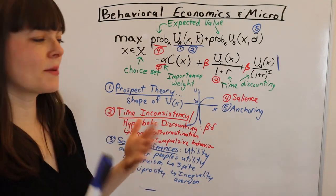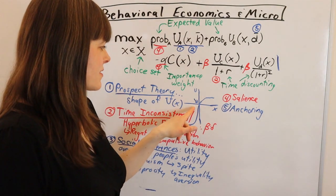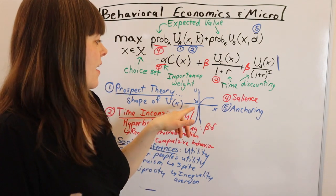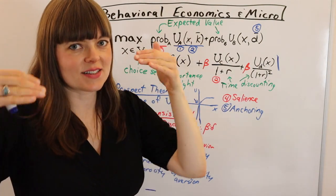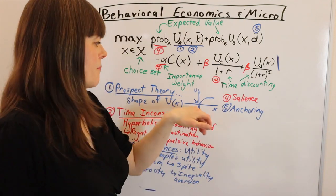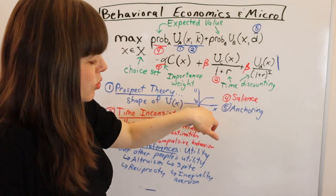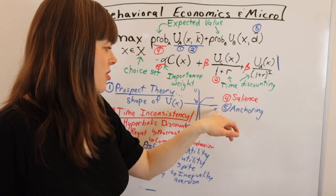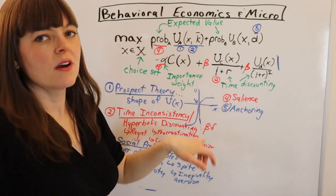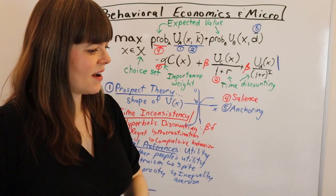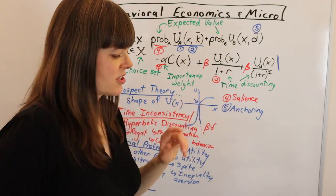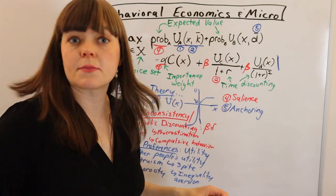And of course, an anchor is going to be an exogenous variable in the model. Now, I should point out some of these concepts are interconnected because of course, the reference point in prospect theory is an anchor. If you have a reference point that isn't how much you have, maybe it's your expectation, or maybe it's something else, it's determining what you consider to be zero, what you consider to be positive, and what you consider to be negative. In which case, an anchor is part of prospect theory. But it's also a separate concept and doesn't have to be part of prospect theory. It's just sometimes an important part.